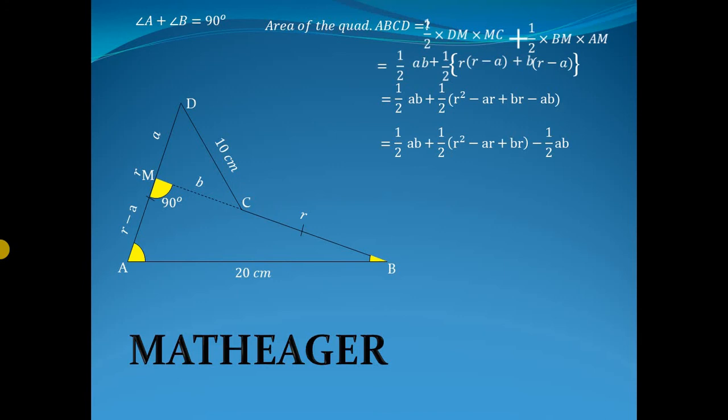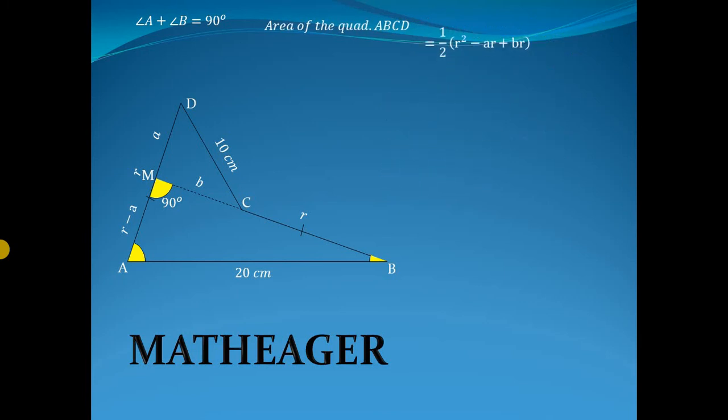This has a negative sign which is a cancellation term, so these will be canceled. Then the remaining will be half (r squared minus ar plus br), which is the area of quadrilateral ABCD.